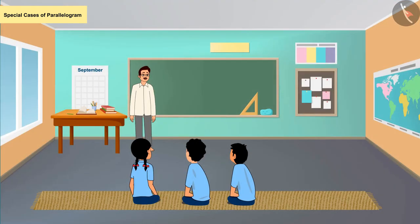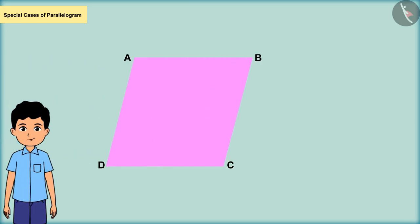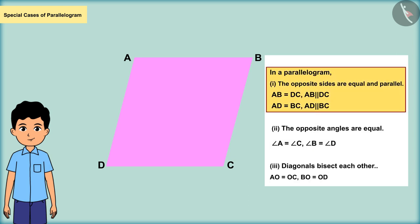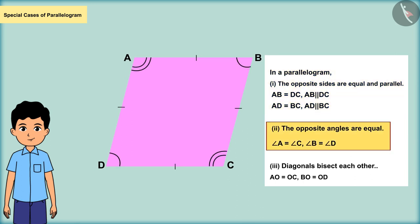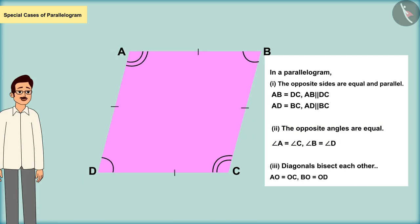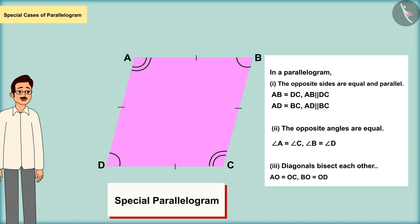Ramesh, Raju, and Meena were asked to make a parallelogram. Ramesh explained: in a parallelogram the opposite sides are parallel and of equal measure, so he made a parallelogram with four sides of equal measure in which the opposite angles are also equal. Very good, Ramesh! All the sides of this parallelogram are of equal measure, therefore we can call it a special parallelogram.